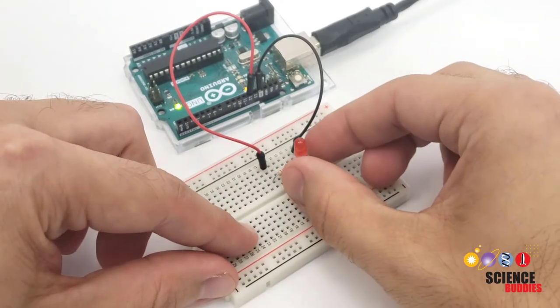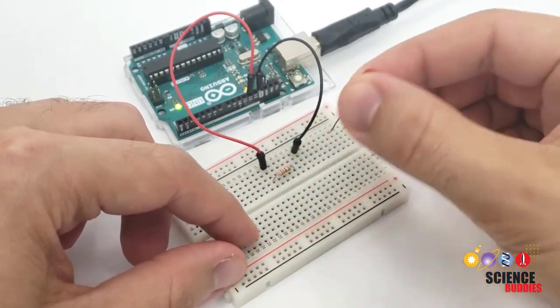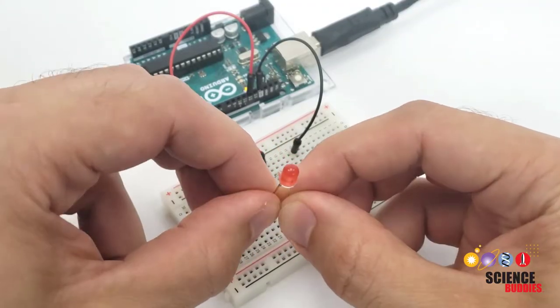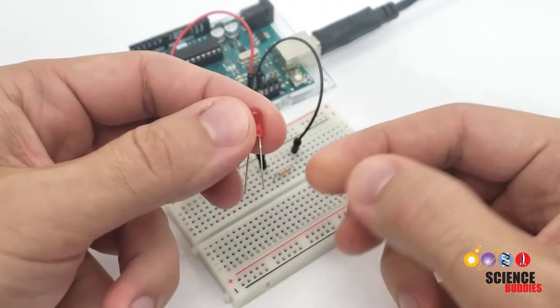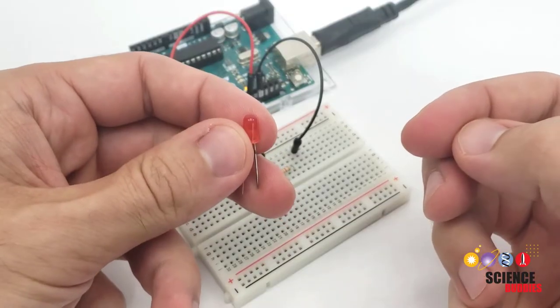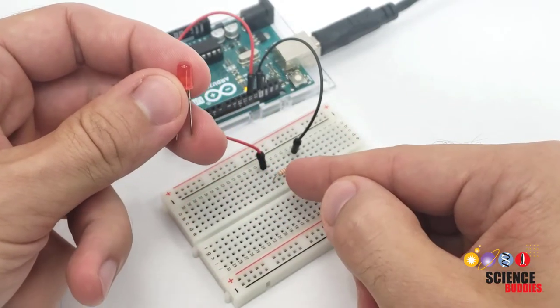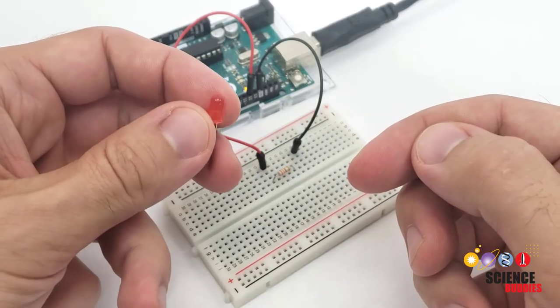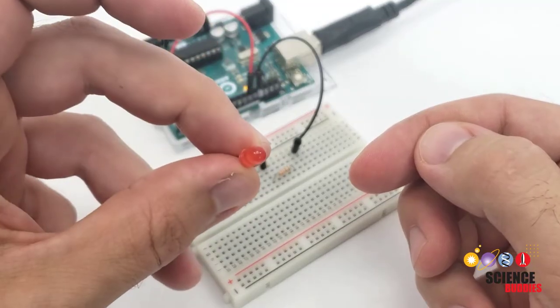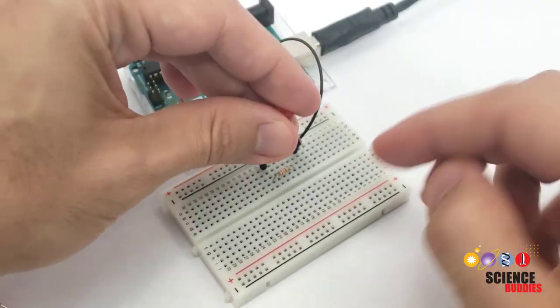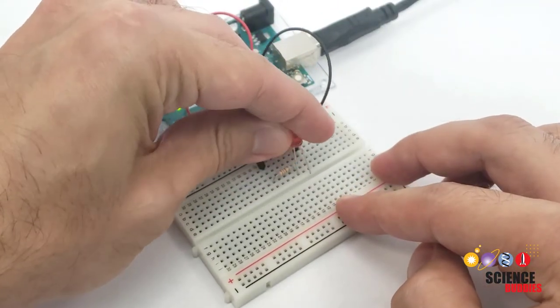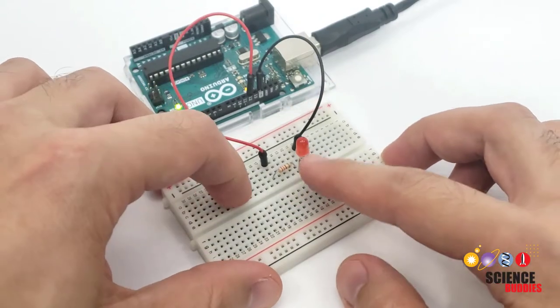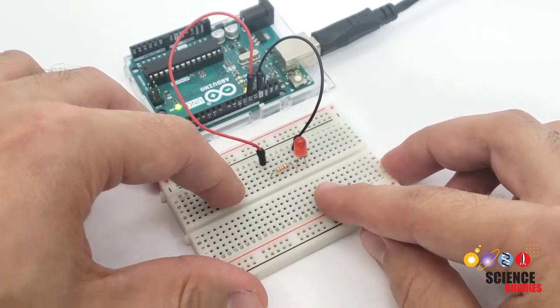Now, sometimes it is possible for electronic components to break even if there are no obvious signs of physical damage. For example, I intentionally burned out this LED by connecting it directly to a battery with no resistor. Normally, the resistor helps limit the flow of current through the LED to safe levels. However, you could never tell just by looking at the LED, so it might be confusing when you have the LED in your circuit, you're trying to debug, you think you've fixed all the mistakes, but the LED simply isn't lighting up.